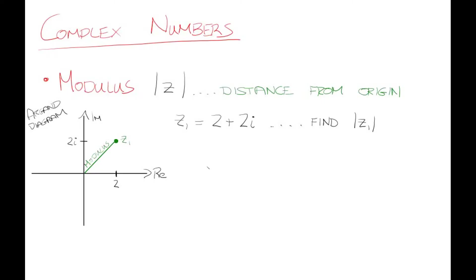For modulus of a complex number, it's basically the distance from the origin. You'll always see it denoted by straight line brackets around the complex number. So for example, if some complex number z1 is equal to 2 plus 2i and you want to find the modulus, those straight line brackets mean the modulus, or distance from the origin. It's as simple as using Pythagoras's theorem.